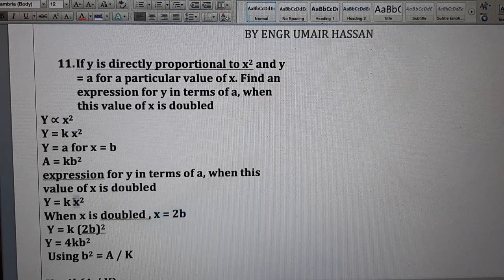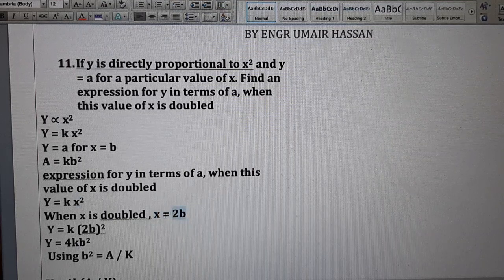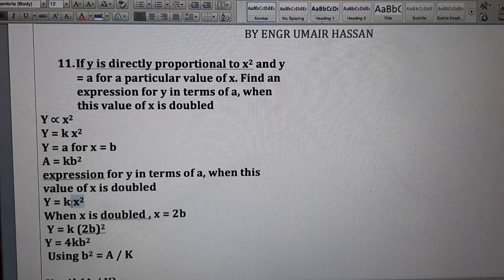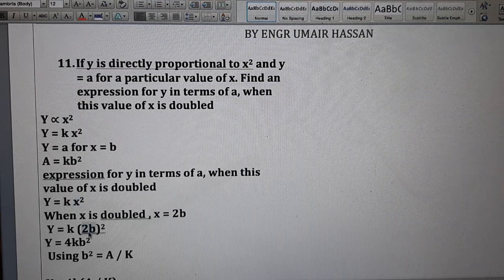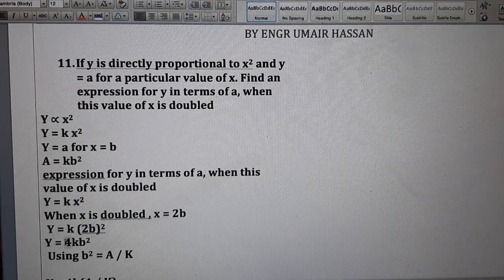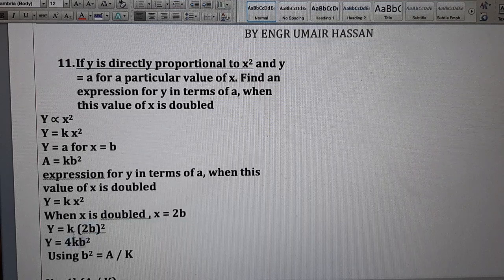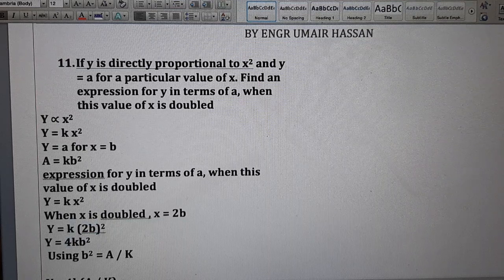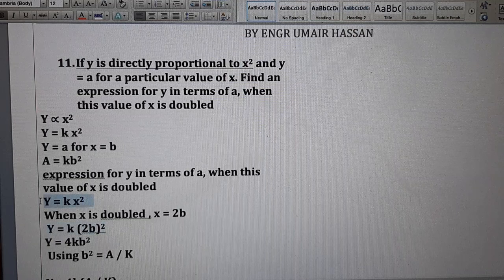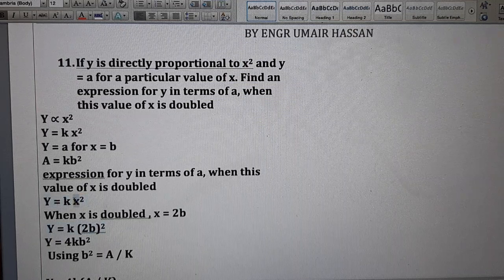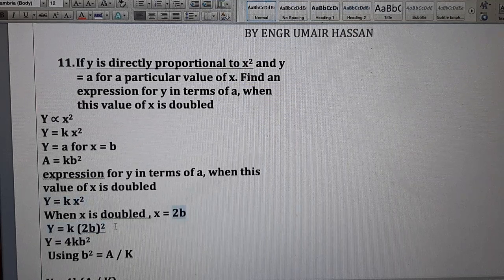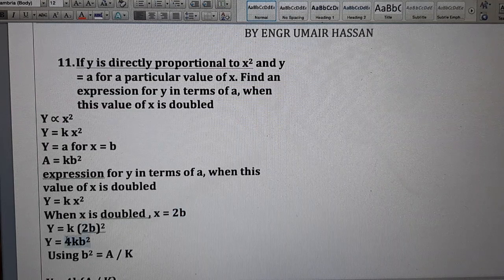Now, use x equal to 2b in this equation. So, x is equal to 2b and 2b square is 4b square where k is constant. This equation is this one basically and I have just inserted x equal to 2b and then taken its square, it becomes 4b square.